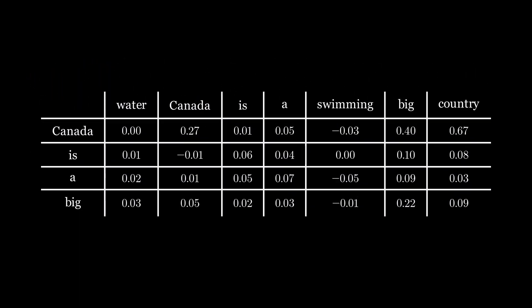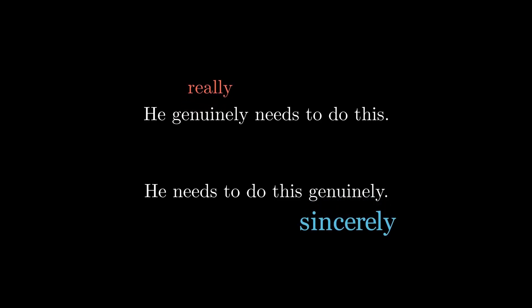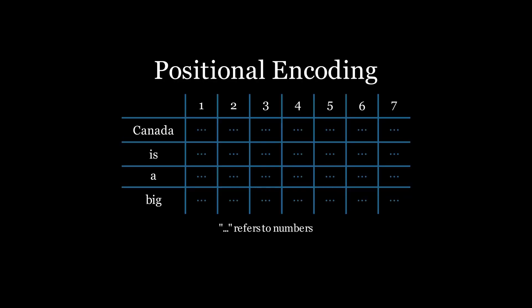When ChatGPT is deciding the next word, it extracts the rows associated with the input words. The second component labels the exact position of each word by creating a second set of numbers based on the position of the word in the text. Consider these two sentences: in the first sentence, 'genuinely' is more closely linked with 'really,' while in the second sentence it is more closely linked with 'sincerely.' This second set of numbers helps the algorithm distinguish between the two.